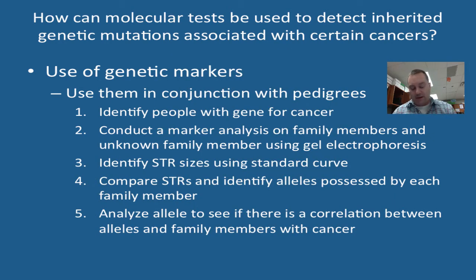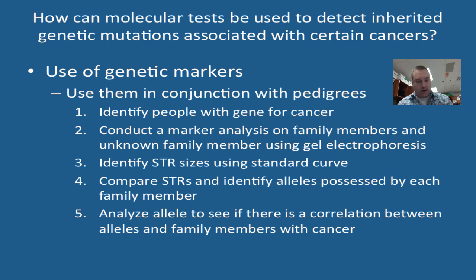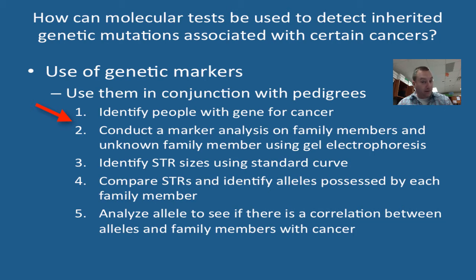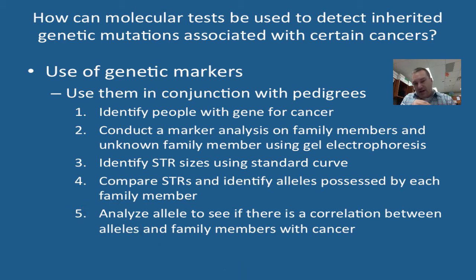The rest of Activity 3.23 confirmed that Judy, Laura, and Jennifer had allele three, which was the cancer allele, and you had to write a letter to Judy explaining the prognosis and what she should do in the future. To summarize: you can use a genetic marker to identify people with a gene for cancer, conduct marker analysis using gel electrophoresis, identify STR sites using a standard curve, compare STRs to identify the alleles possessed by each individual, and then analyze the alleles to see if there's a correlation with the family members who have cancer.